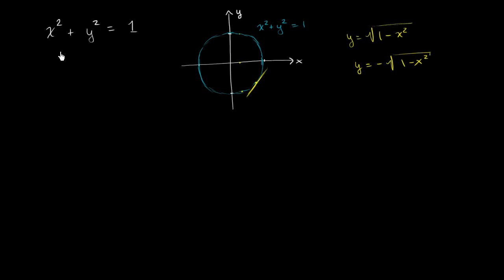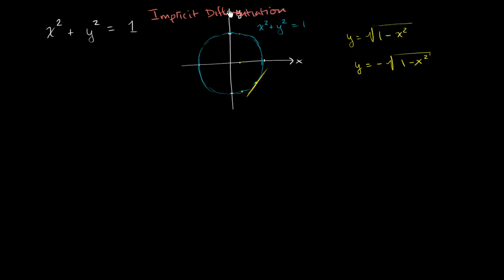The way we do that is literally just apply the derivative operator to both sides of this equation, and then apply what we know about the chain rule. Because we are not explicitly defining y as a function of x, they call this — which is really just an application of the chain rule — implicit differentiation. And what I want you to keep in the back of your mind the entire time is that it's just an application of the chain rule.